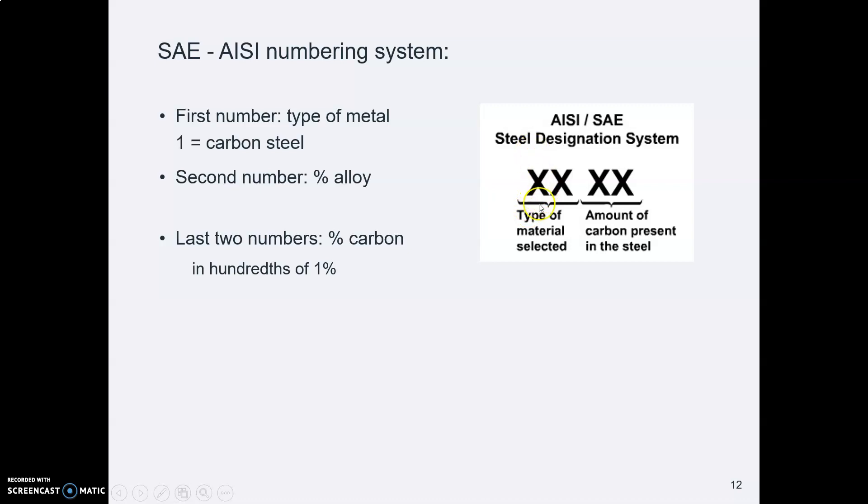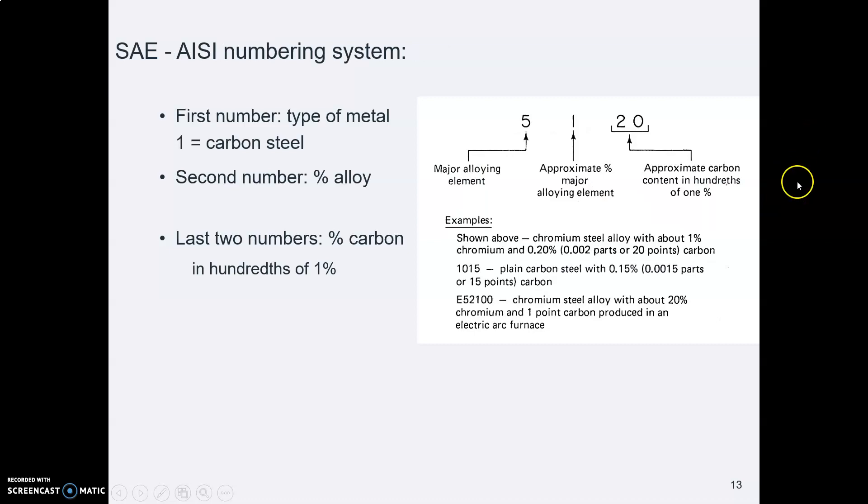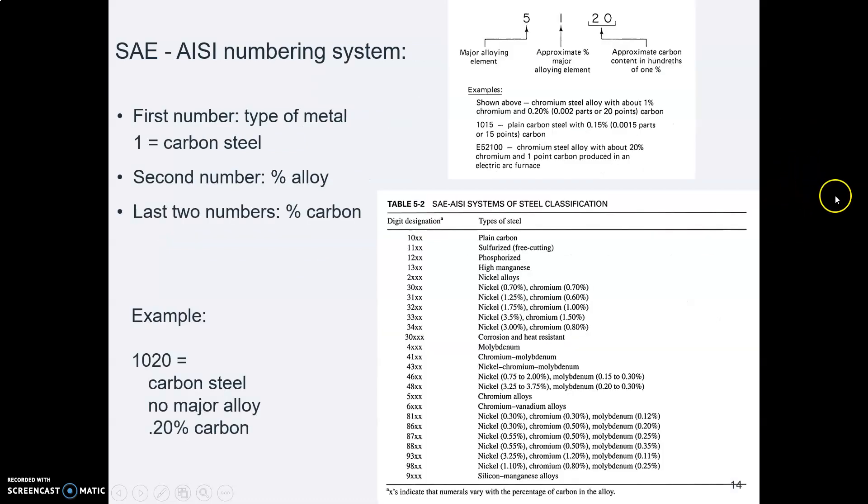So, this numbering system uses four numbers. The first one means what kind of metal is it? If it's carbon steel, it will start with a one. Then the second number is the primary alloy and about what percent it is. And then the last two numbers are what percent of carbon in hundredths of a percent.